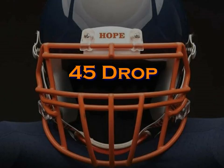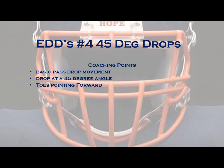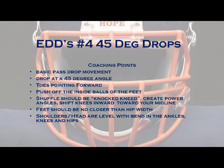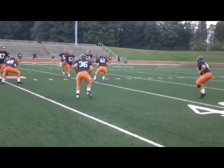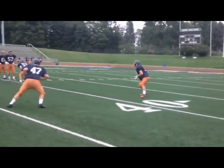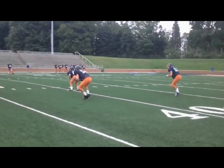The last movement of our everyday drills are 45-degree angle drops. This movement is our basic pass-drop movement. We'll always work at a 45-degree angle, with our toes pointed forward, weight on the inside balls of our feet, working to be knock-kneed. Feet will be no closer than hip width, with our shoulders and head level, with good bend in our ankles, knees, and hips. This is a foundational movement for our linebackers, because we shuffle to depth in the majority of our zone coverages. Similar to our shuffle drill, you want to look for linebackers starting to point their toes outward as they shuffle.